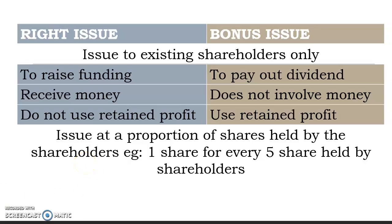The right issue involves receiving money, but the bonus issue does not involve any money. The bonus issue is issued using retained profit, whereas the right issue does not depend on retained profit. Whenever the company wants to issue bonus issue shares, they must have sufficient retained profit — otherwise they cannot issue it.